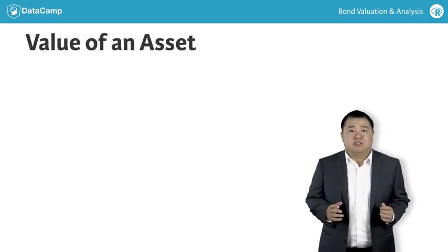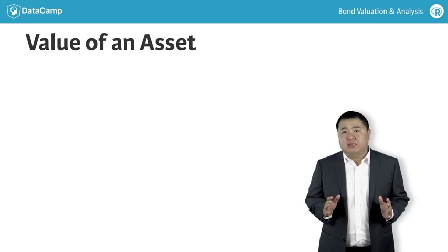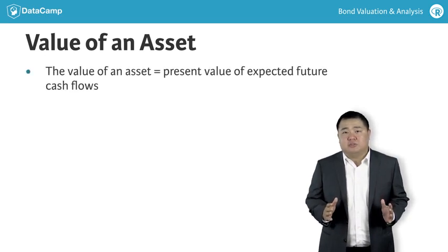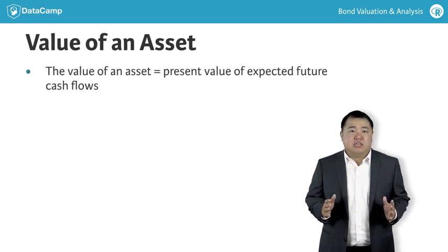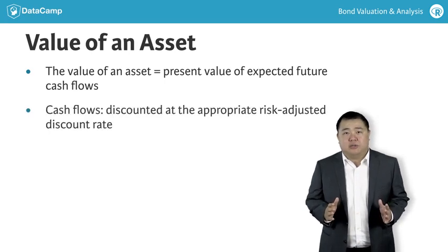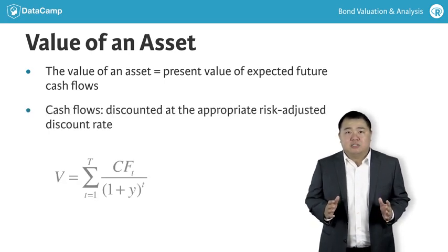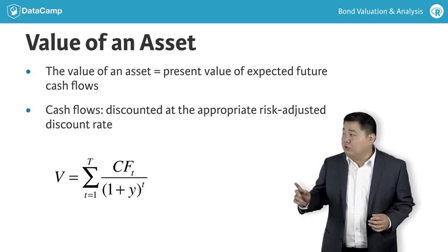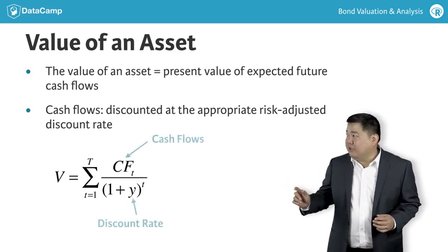As a matter of economics, the value of any asset is equal to the present value of its expected future cash flows. These cash flows are discounted at an appropriate risk-adjusted discount rate. This is reflected mathematically in the equation on the slide.